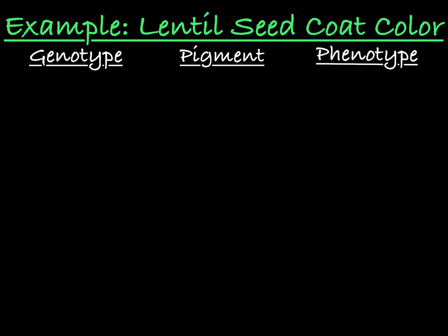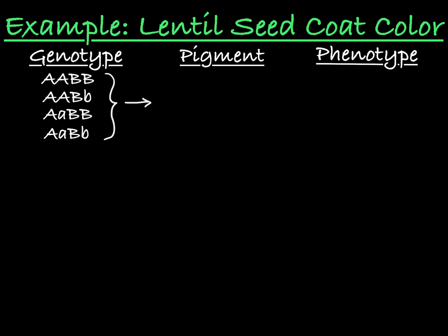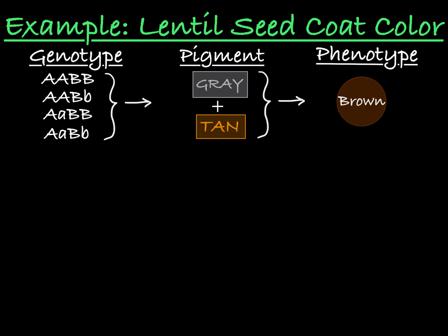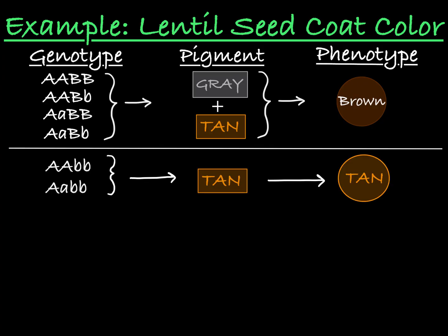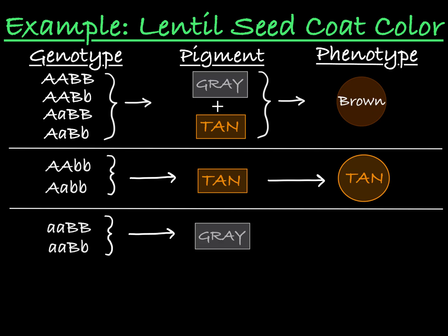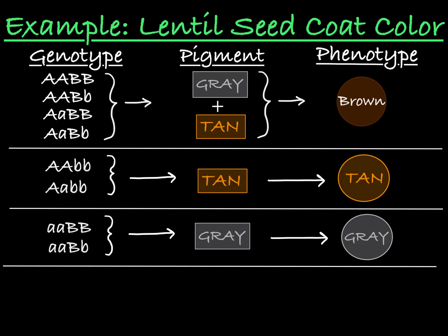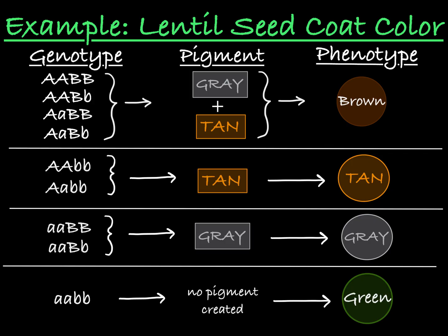Let's put the genotypes of these two genes together to see how they impact seed coat color. If the plant makes both gray and tan pigment, which together makes the seed coat appear brown — these gray and tan pigments are layered on top of each other to create this brown coloring. If the plant makes only tan pigment, the seed coat appears tan. If the plant makes only gray pigment, the seed coat appears gray. And if the plant is homozygous recessive for both genes A and B, then it makes no seed coat pigment, and the green chlorophyll from the tissues underneath the seed coat shows through, making the seed appear green. So you can see that the interactions between the products of gene A and gene B layer to create the seed coat phenotype.